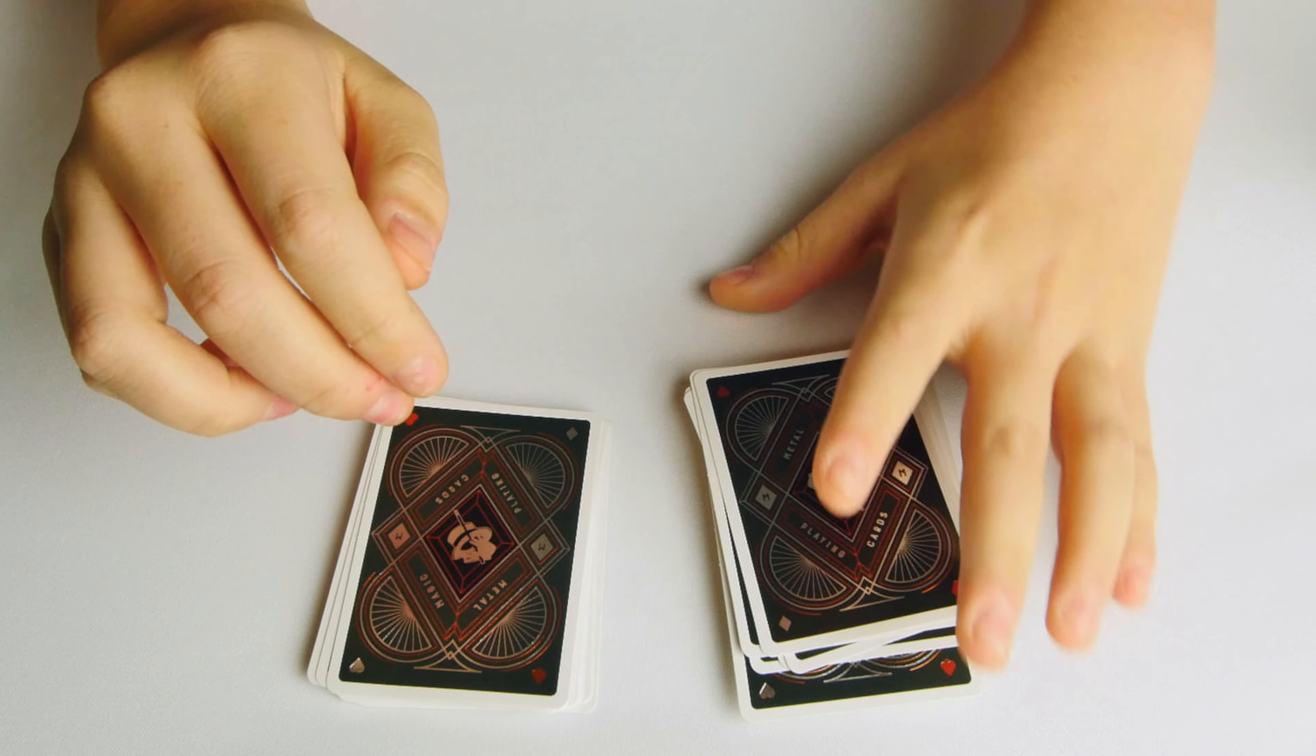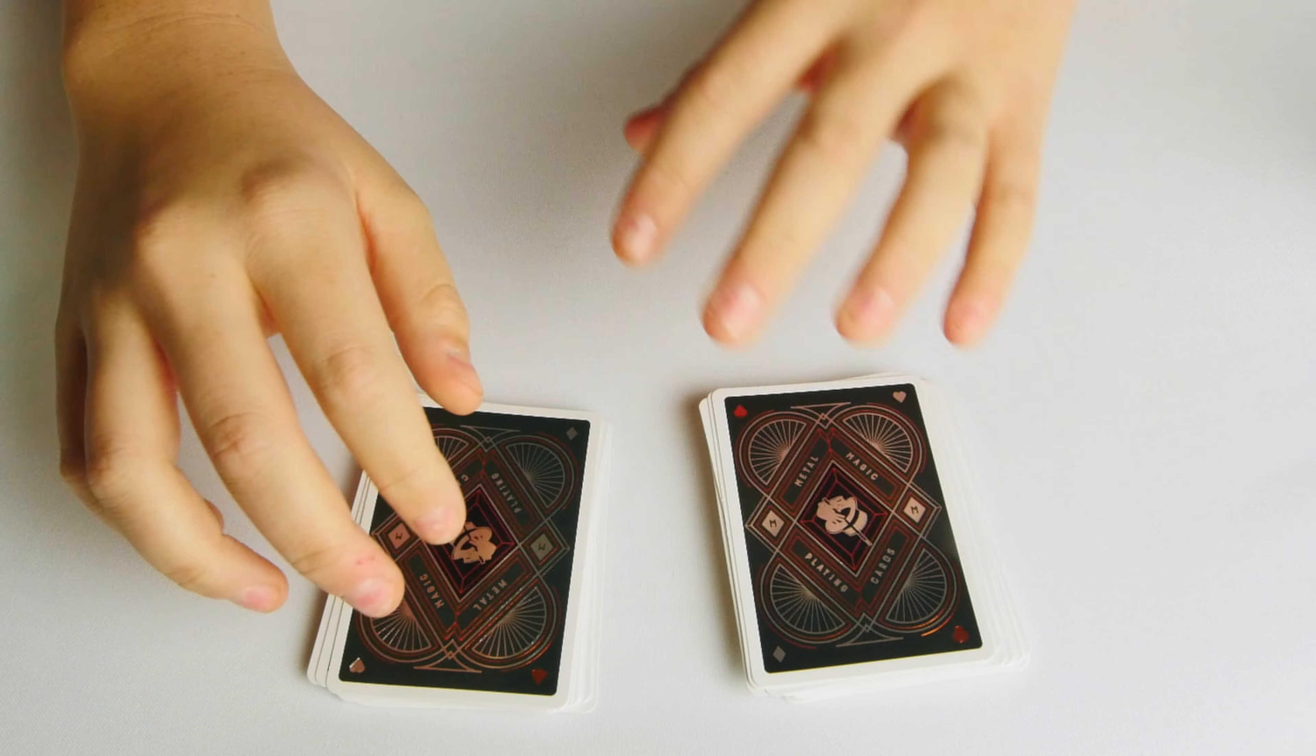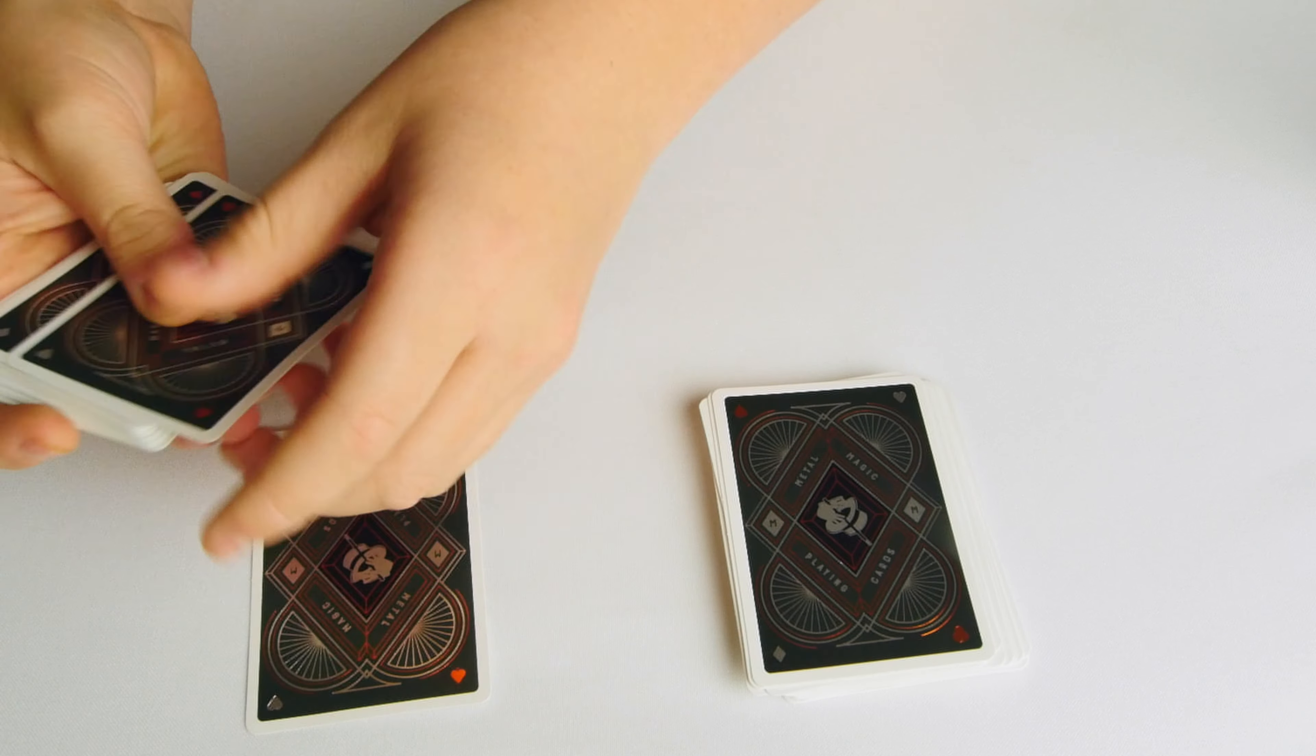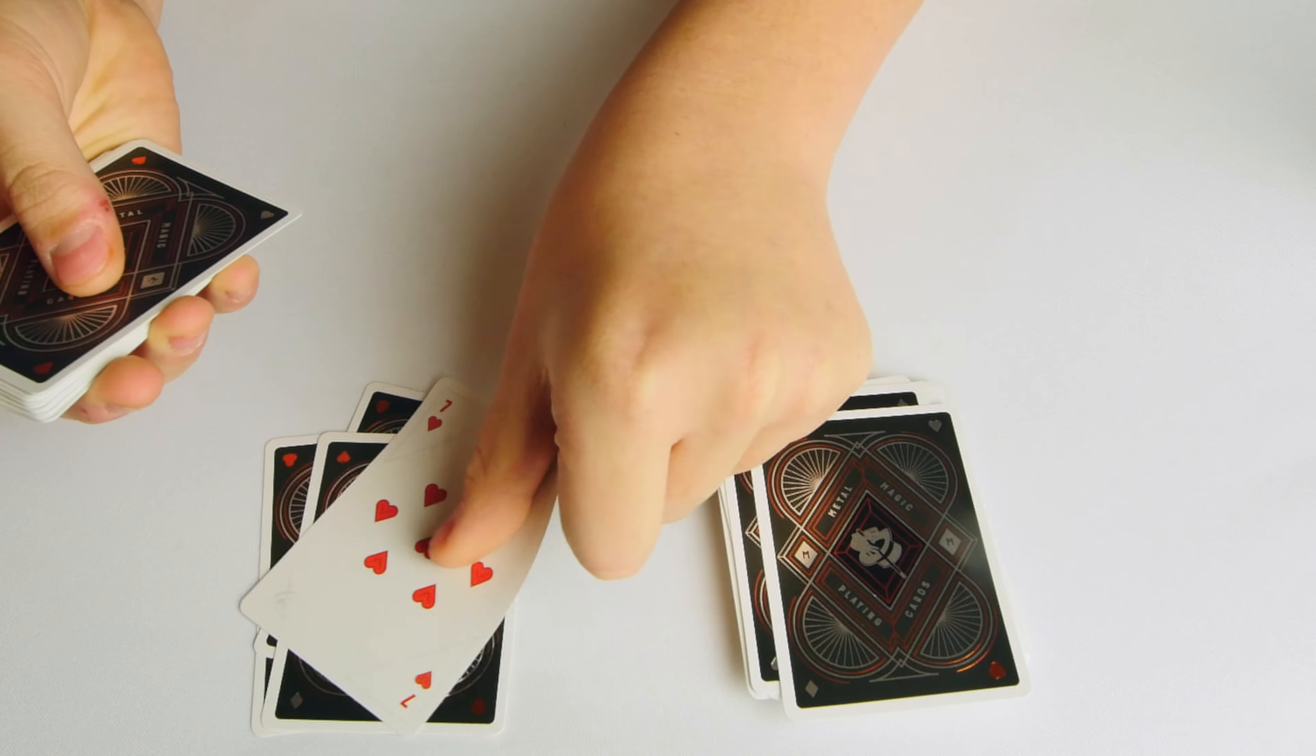The fourth card in this deck is going to tell us that the fourth card in this deck is the Seven of Hearts. One, two, three, and there it is.